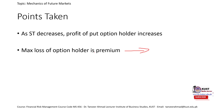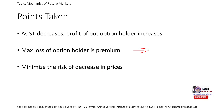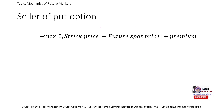For the option writers (sellers), the maximum profit is the option premium they received. To minimize the risk of a decrease in price — for someone who is going to sell an asset and fears the price might fall — they would want to go for the long put option. The last case is the seller of the put option.